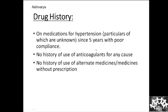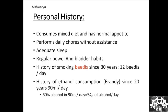He is on medication for hypertension — particulars unknown — since five years, with poor compliance. No history of anticoagulant use for any cause. No history of alternate medicines or medicines without prescription. He consumes a mixed diet with normal appetite, performs daily chores without assistance, sleeps adequately, and has regular bowel and bladder habits. History of smoking — bidi — since 30 years, 12 bidis per day. History of ethanol consumption — brandy — since 20 years, 90 ml per day.